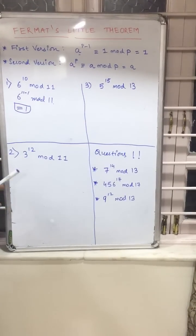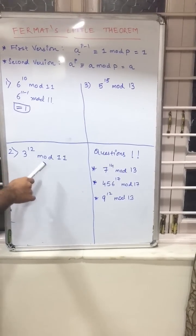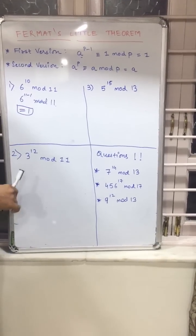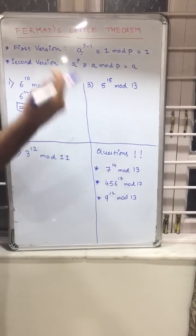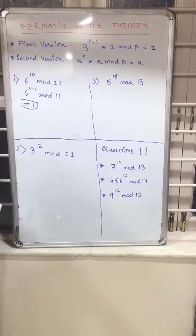Now let us move to the next example. So here we have 3 raised to 12 mod 11. Let me tell you that we will not always be plattered with very delicious dishes, so we have to do work by our own.